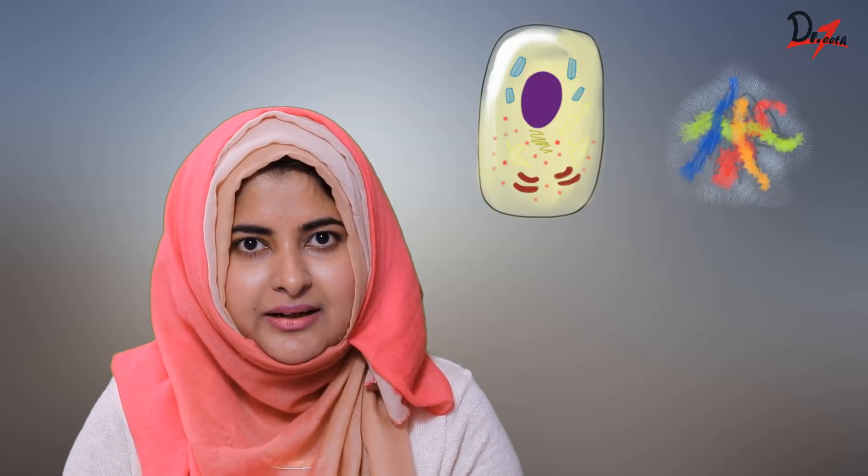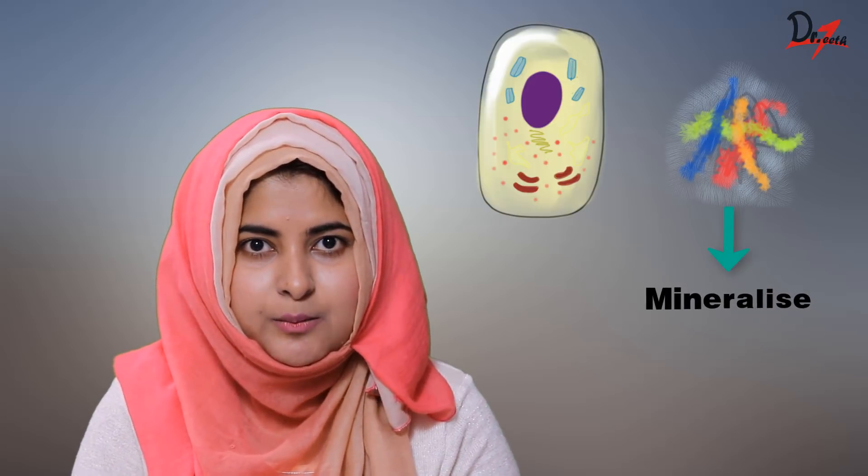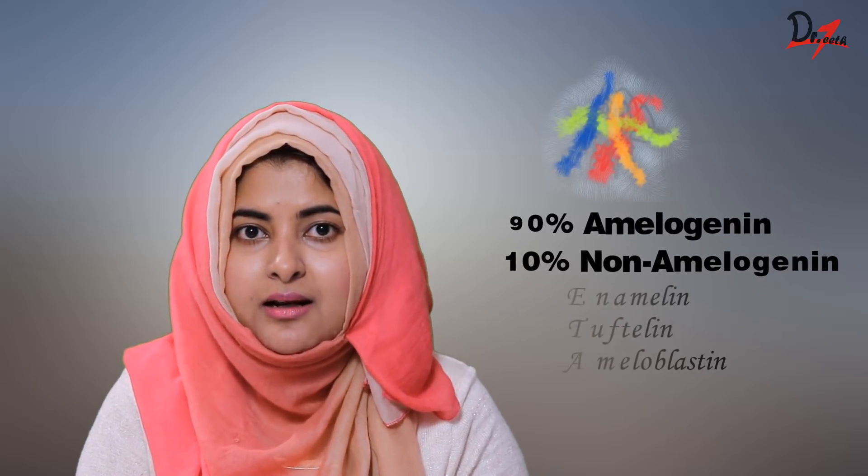Now, let us see in short how enamel actually forms. First, ameloblasts will secrete enamel matrix protein. These enamel matrix proteins will be degraded and mineralized, and eventually enamel will form. Enamel matrix protein consists of 90% amelogenin and 10% non-amelogenin. The non-amelogenin portion has proteins like enamelin, tuftalin, and ameloblastin.